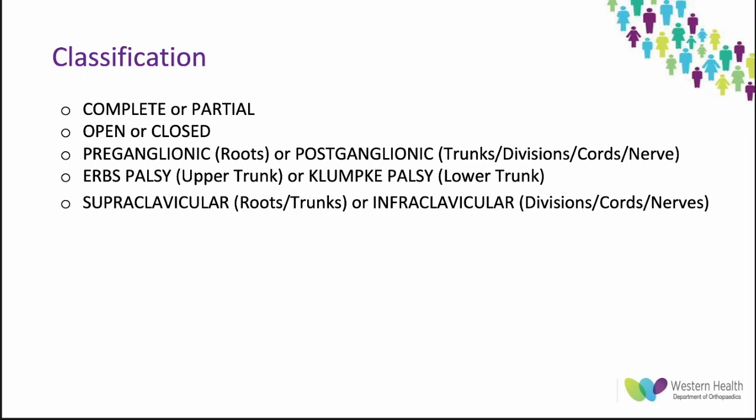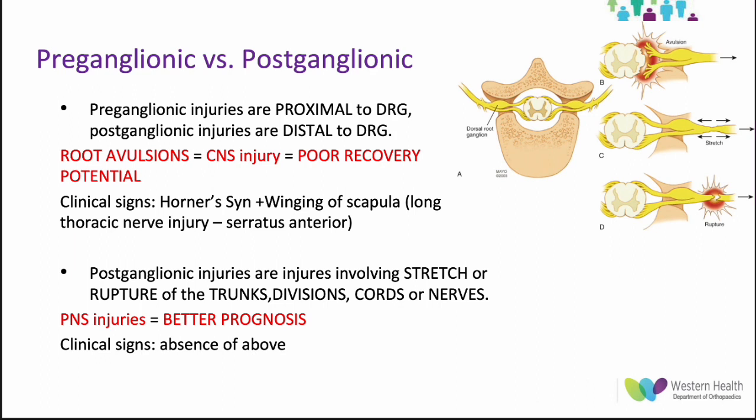Classifications are really important in brachial plexus injury for both prognostic and treatment reasons. We have different types including complete versus partial, open versus closed, preganglionic (involving the roots) or postganglionic (involving trunks, divisions, cords and nerves), Erb's palsy (upper trunk injury) versus Klumpke's palsy (lower trunk injury), and supraclavicular (involving roots and trunks) versus infraclavicular (involving divisions, cords and nerves). Preganglionic injuries, where spinal roots are avulsed from the spinal cord or ruptured proximal to the dorsal root ganglion, are technically central nervous system injuries with poor recovery potential and a poorer prognosis.